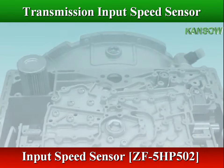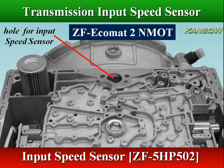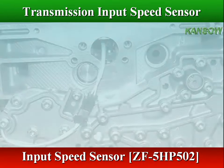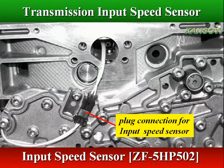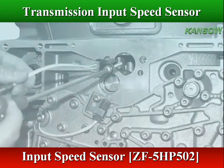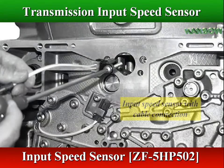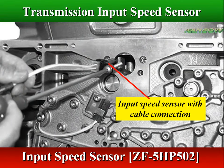In ZF ECOMAT 2 transmissions, the input speed sensor is internally mounted on the control insert, through a drilled hole in the bottom of the transmission housing, and directed at the impeller drive gear.